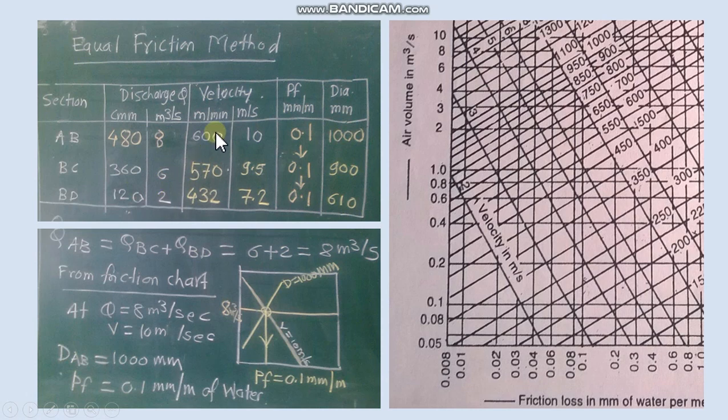In first duct, main duct velocity is given that we take in m³ per second. Now these are the remaining values that we will calculate in red color. So we start with the help of friction chart. From the friction chart for the main duct Q value and velocity value combination we get PF and diameter.